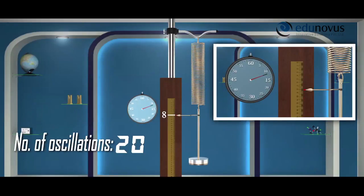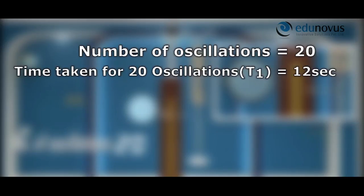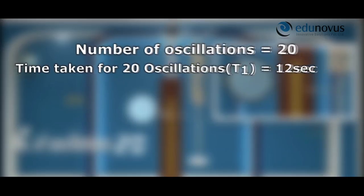Measure the time taken for 20 oscillations. The time taken for 20 oscillations is 12 seconds. Note it down as T₁ in the observation table.